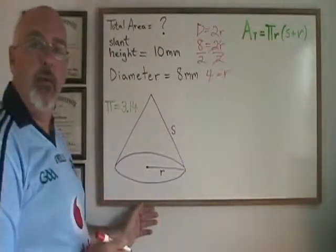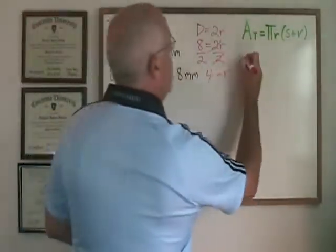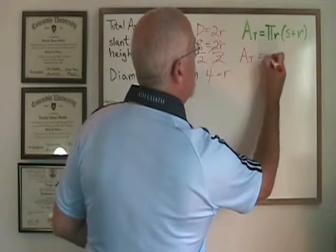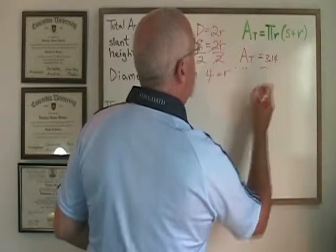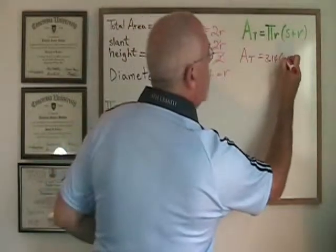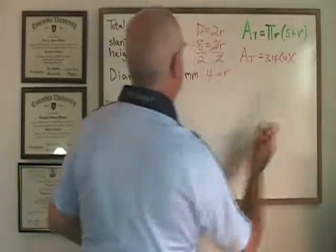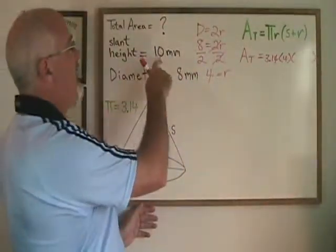And now we can go ahead and plug into our formula. AT as our unknown is equal to pi which is 3.14, times r which is 4, times s plus r which will be 10 plus 4.